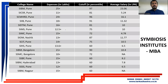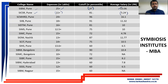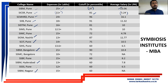Now let's look at the SNAP colleges ranked by order. SIBM Pune has fees of around 20.5 lakhs, average salary of 23 lakhs, and a cutoff percentile of 97%. SICSR Pune has fees of 11 lakhs, average salary of 5.24 lakhs, and a cutoff percentile of 81%. Other notable colleges include SCMHRD, SIIB, SIDTM, SIOM, SCID, SIBM Bengaluru Road, SIBM Hyderabad, and SIBM Nagpur.